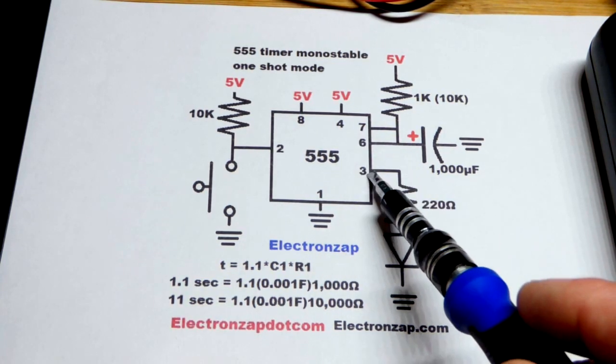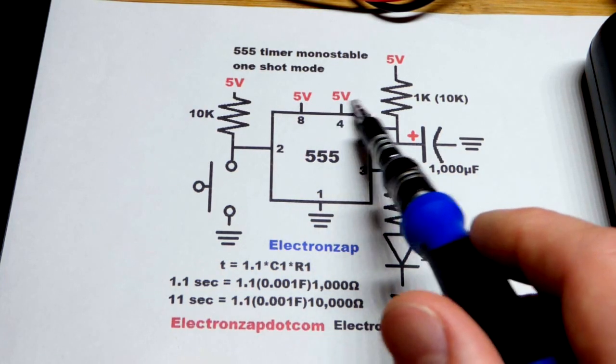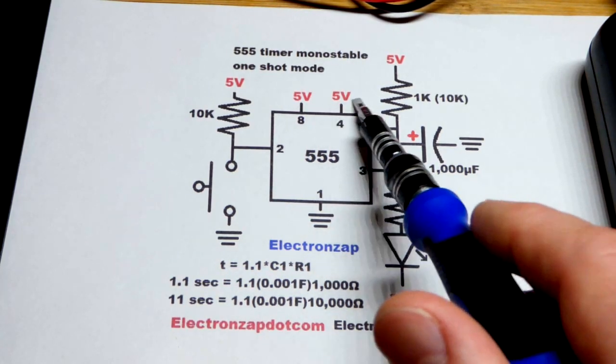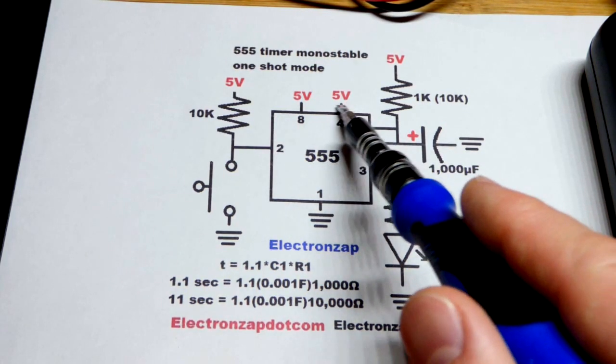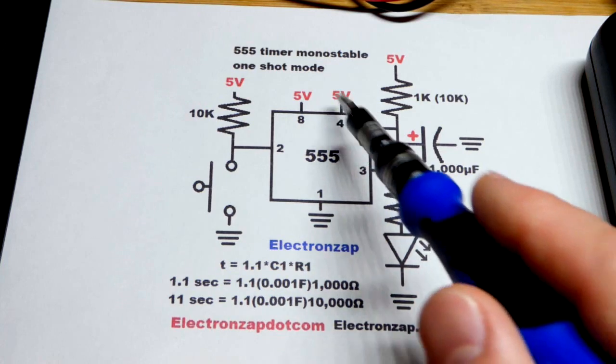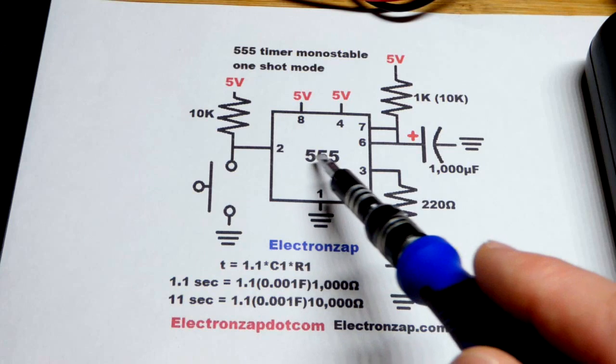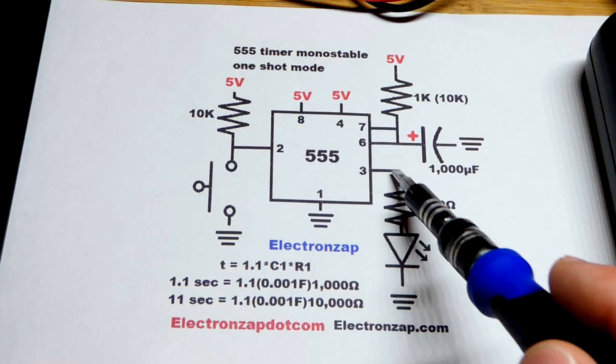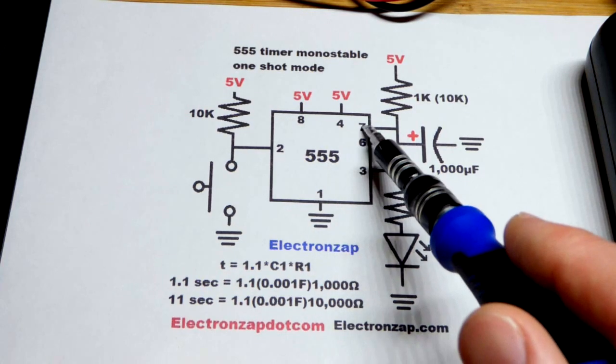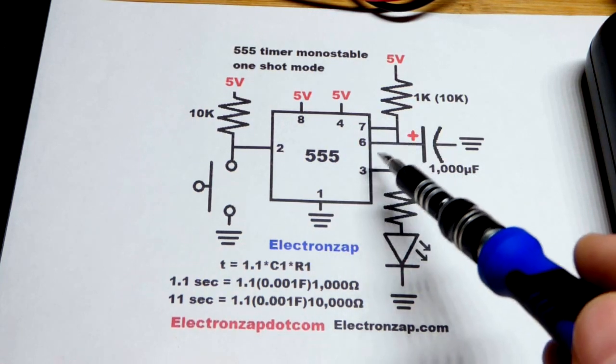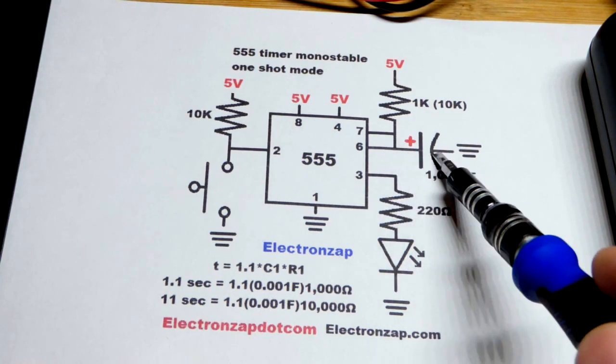What happens is first, the output goes high. It's not 5 volts though. We lose about a volt and a half for most 555 timers. There's specialty 555 timers where you'd get the full 5 volts, but most 555 timers like the NE-555, you get 3.5 volts. That LED will light up. Also pin 7 will stop connecting to ground. It will be like an off switch for the most part.